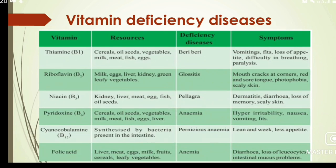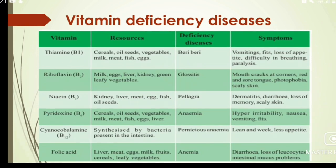Vitamin B2 is Riboflavin. Sources include milk, eggs, liver, kidney, and green leafy vegetables. The deficiency disease is Glossitis. Symptoms include mouth cracks at corners, red and sore tongue, photophobia, and scaly skin.